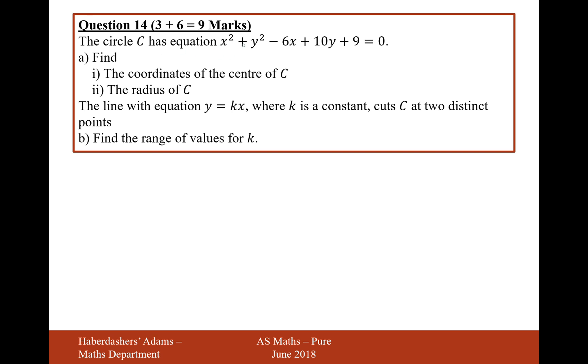The circle C has equation x squared plus y squared minus 6x plus 10y plus 9 equals 0. Find the coordinates of the centre C, the radius of C as well.